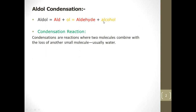Condensation is a reaction in which two smaller molecules combine and eliminate a small molecule, forming a large molecule. For example, two amino acids — glycine and alanine — react with each other, eliminate a molecule of water, and a peptide bond is formed. This is a condensation reaction. The reverse of condensation is hydrolysis in most cases.